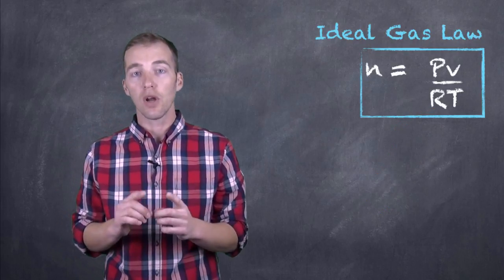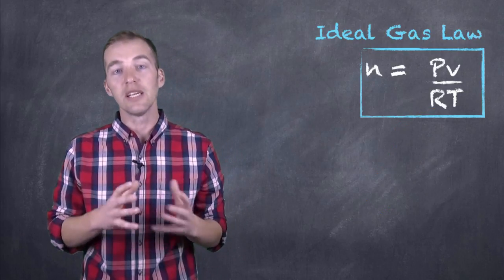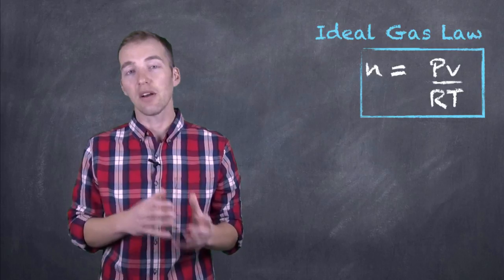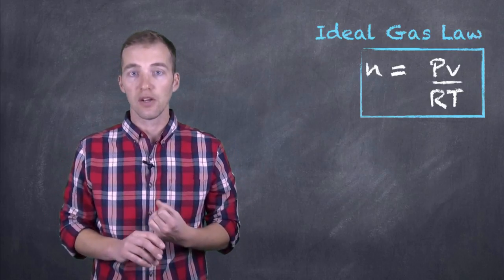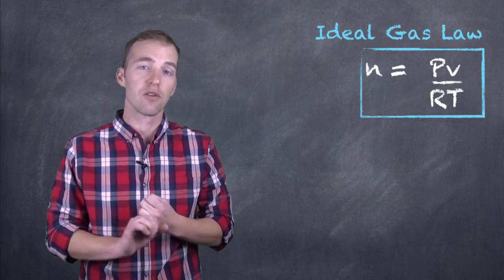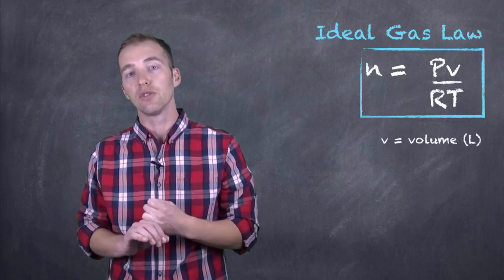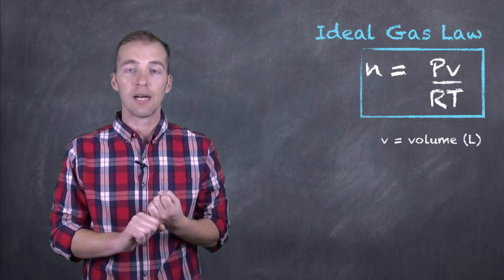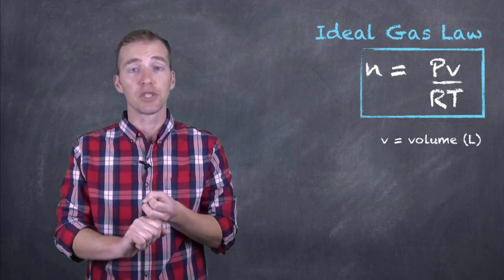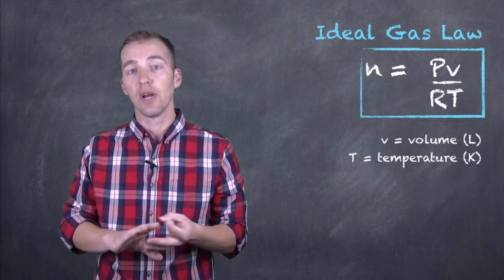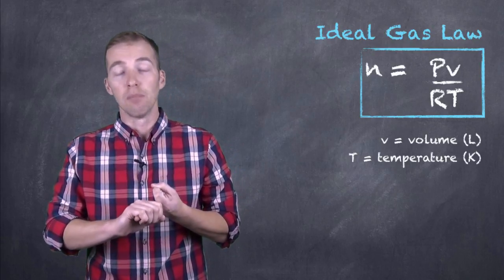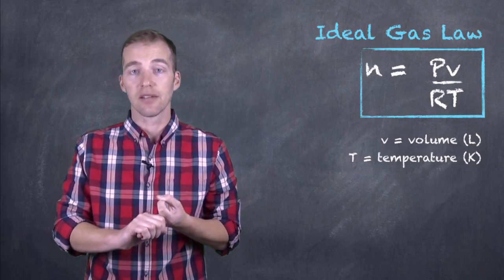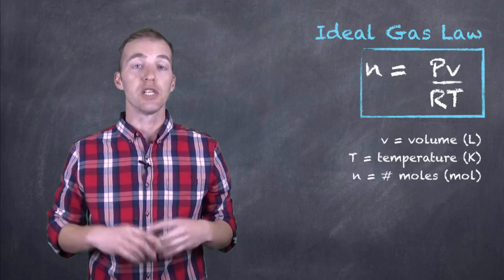Now it's important to note that this R constant is going to be different depending on the pressure unit that you use. Now we're always going to evaluate an ideal gas using liters as our volume unit, we are always going to evaluate it using Kelvin as our temperature unit, and we're always going to evaluate it using the number of moles of gas as our amount of gas. So those ones are not going to change.